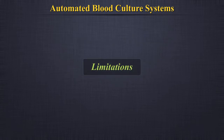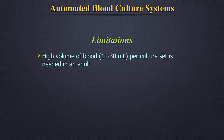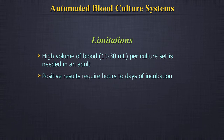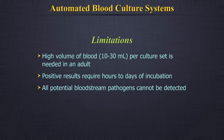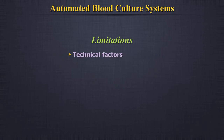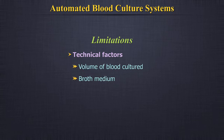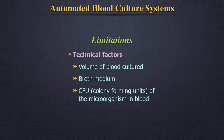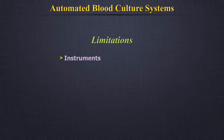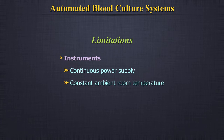Limitations. Automated blood culture systems currently represent the gold standard for diagnosis of septicemia; nonetheless, they have the following limitations. A very high volume of blood — about 10 to 30 millilitres per culture set — is needed in an adult. Positive results require hours to days of incubation. Not all potential bloodstream pathogens can be detected. Many technical factors can cause variability in sensitivity, most importantly the volume of blood cultured, the broth medium used, and the initial colony-forming units of the microorganism in the blood. These instruments also require continuous power supply and constant ambient room temperature.